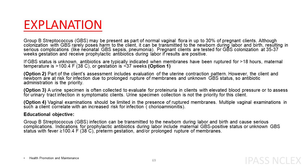Option 3. A urine specimen is often collected to evaluate for proteinuria in clients with elevated blood pressure or to assess for urinary tract infection in symptomatic clients. Urine specimen collection is not the priority for this client. Option 4. Vaginal examinations should be limited in the presence of ruptured membranes, as multiple vaginal examinations correlate with an increased risk for infection, chorioamnionitis. Educational objective: GBS infection can be transmitted to the newborn during labor and birth. Indications for prophylactic antibiotics include GBS positive or unknown status with fever ≥100.4 F (38 C), preterm gestation, and/or prolonged rupture of membranes.